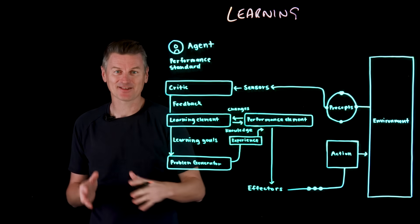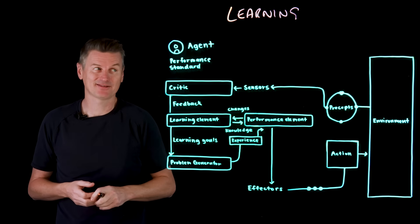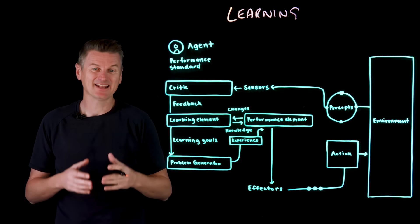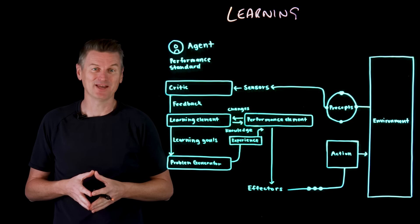The problem generator suggests new actions the agent hasn't tried yet, like try a different path, see if it's any faster, and then the performance element selects actions based on what the learning element has determined to be optimal.